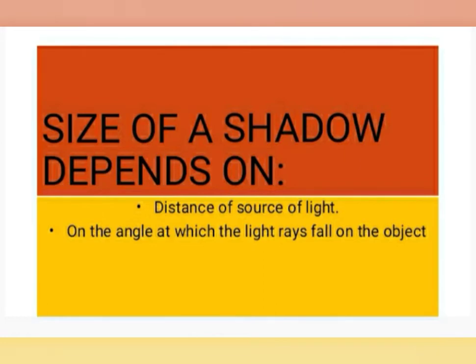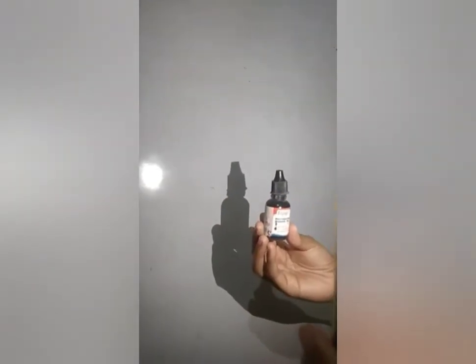Now let us understand with a practical. The torch light of this cell phone acts as a source of light. This white board acts as a screen — or you can use white paper also. Here I am taking the marker ink as the object.